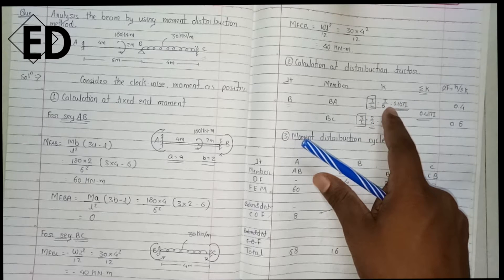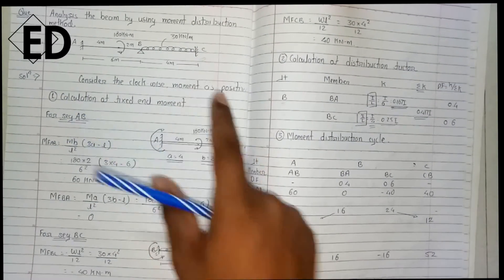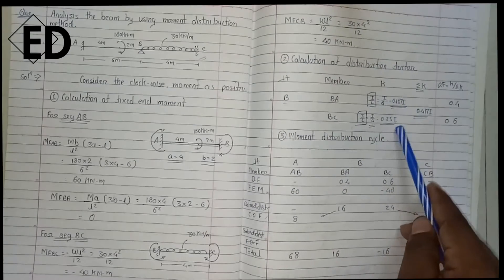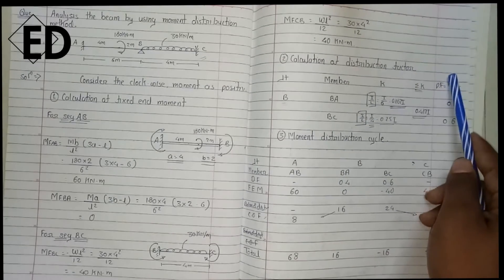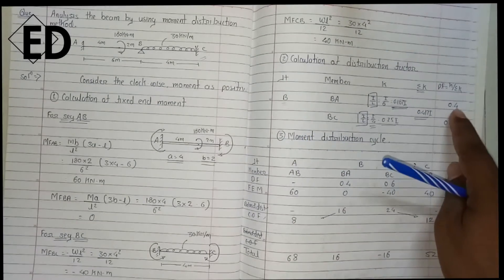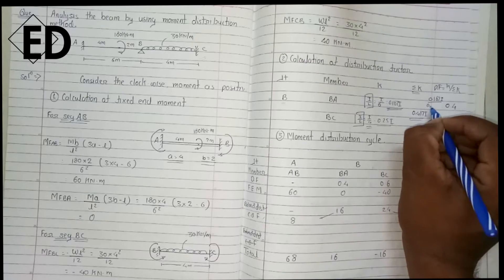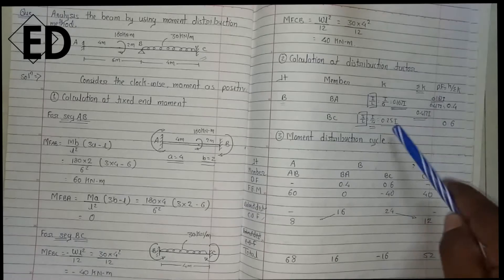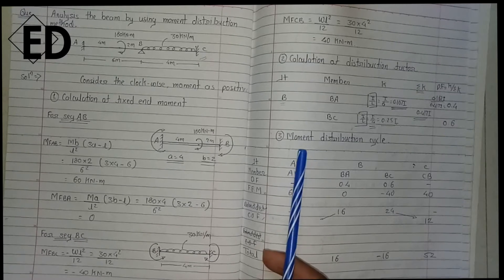For rotational stiffness: when the other end is fixed it is I/L, and when the other end is a roller it is (3/4)(I/L). For span BA the other end is fixed, so K = I/6 = 0.167I. For span BC the other end is fixed, so K = I/4 = 0.25I. The summation is 0.417I. The distribution factor for BA = 0.167/0.417 = 0.4, and for BC = 0.25/0.417 = 0.6.